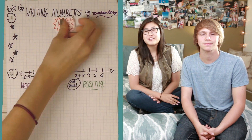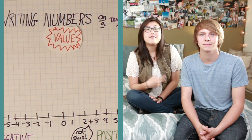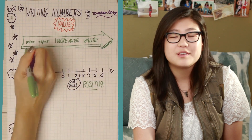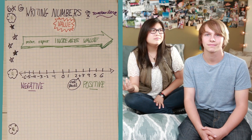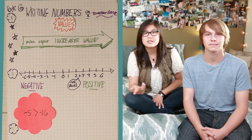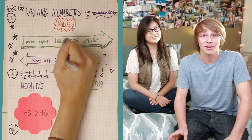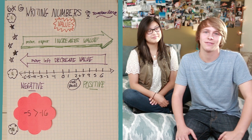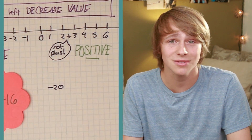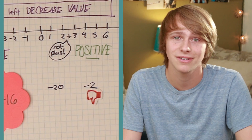Seeing integers on a number line helps us understand the value of one integer compared to another. As we move to the right on the number line, numbers increase in value. For instance, negative 5 has a greater value than negative 16. But if we move left on the number line, numbers decrease in value. After all, would you rather watch a video with 20 thumbs down or one with just 2 thumbs down?